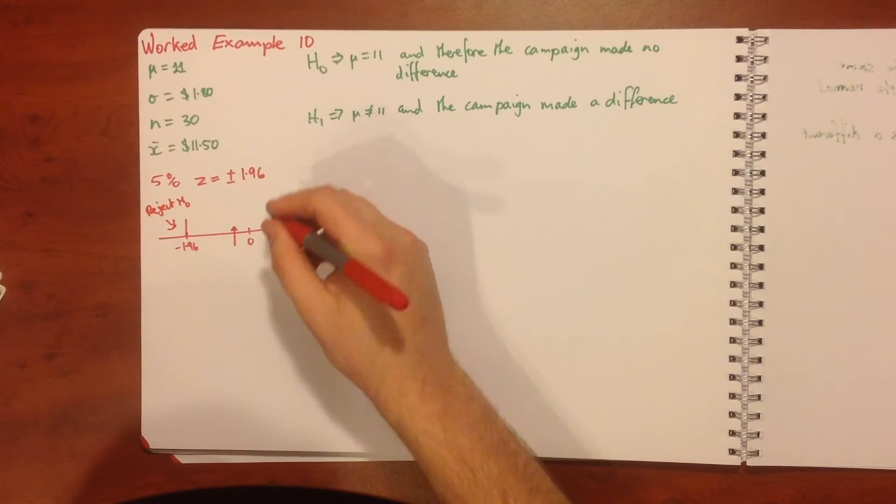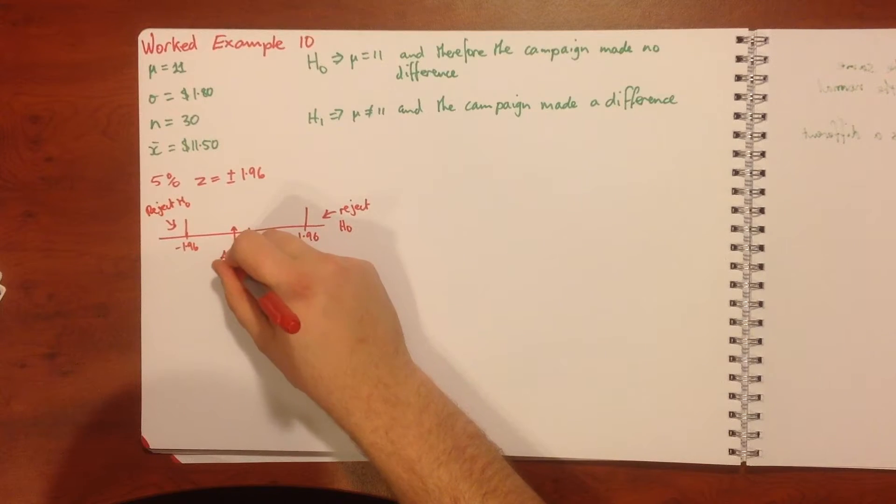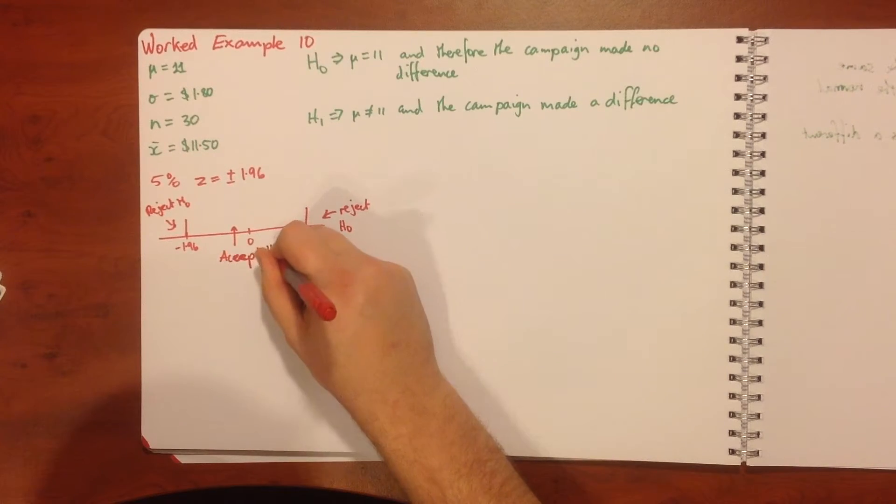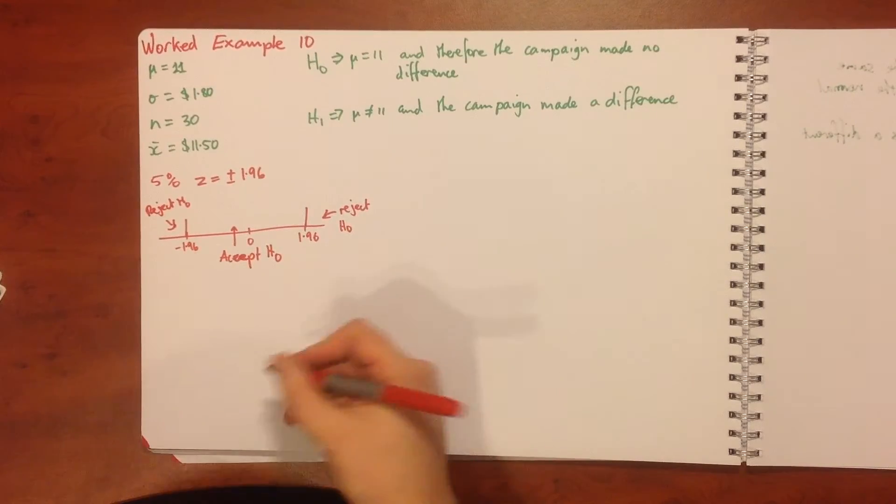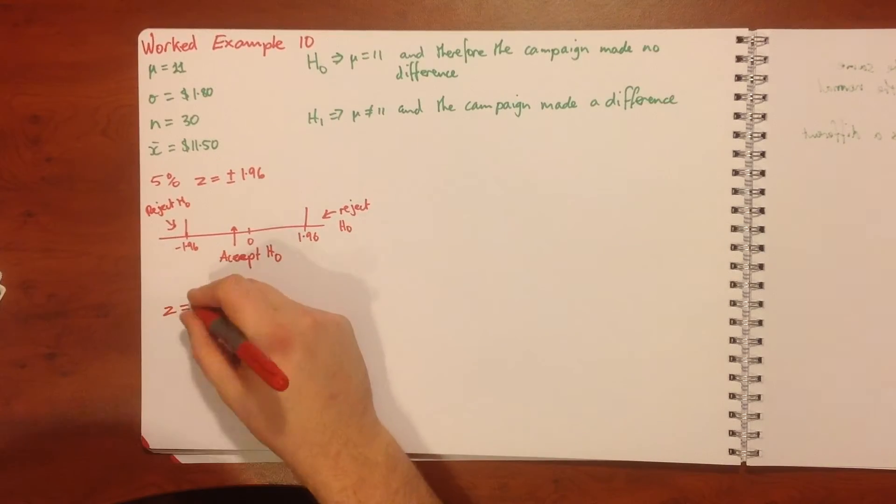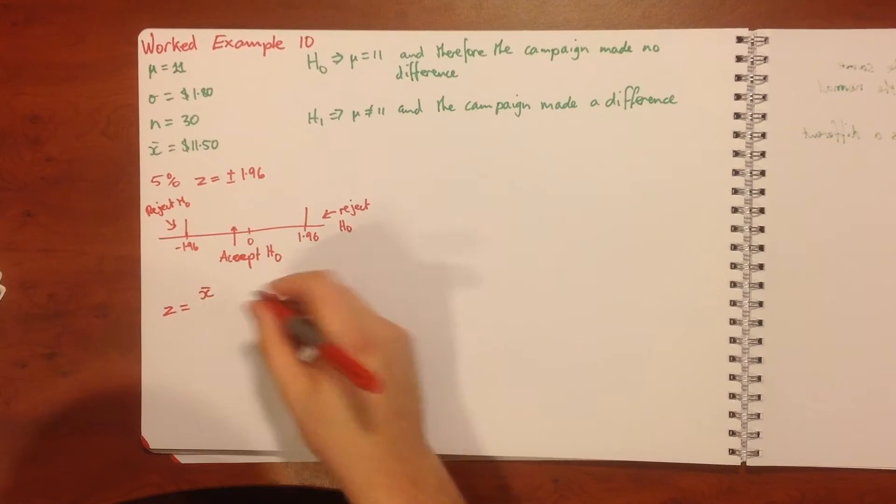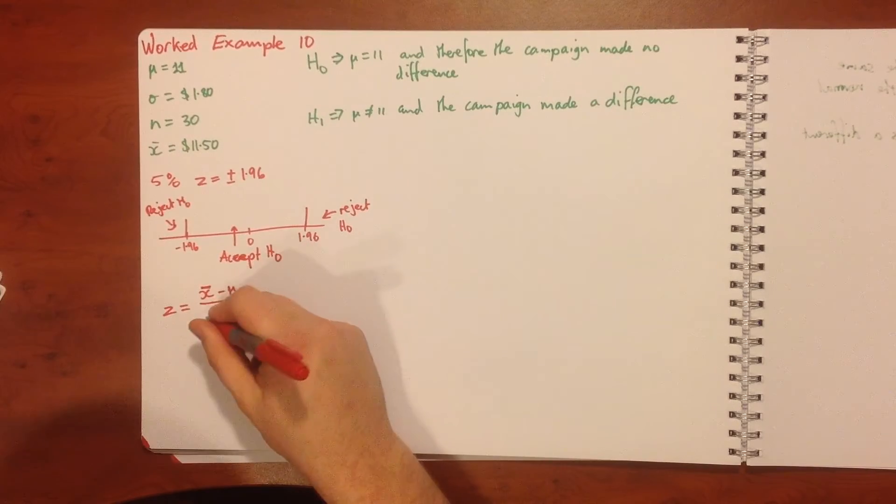And if it falls in here we're going to accept our H naught. So that's what we're testing. What we need to do is actually find our statistic and see where it falls. We're going to use our z equals x̄ minus μ over σ on the square root of n.